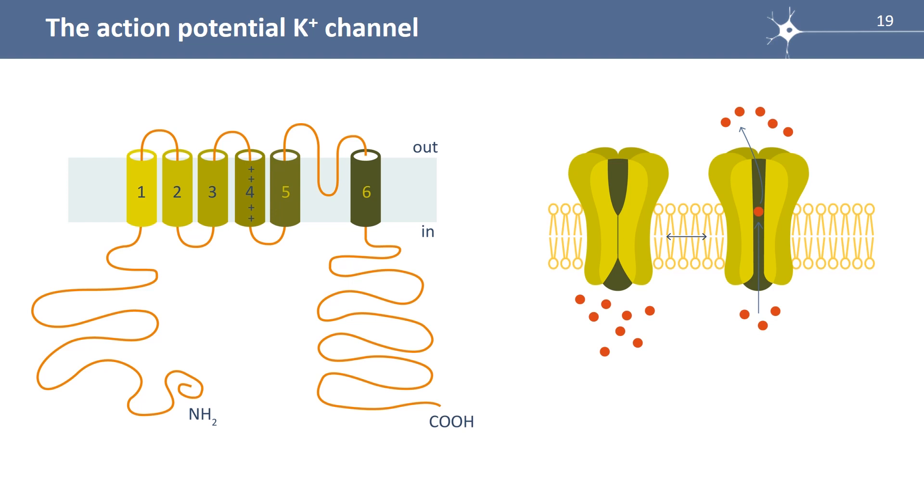Here is the potassium channel of the action potential. Here is the plasma membrane, and the potassium channel is a protein made up of a sequence of amino acids. And you recognize here the six transmembrane segments, the P-loop or loop.